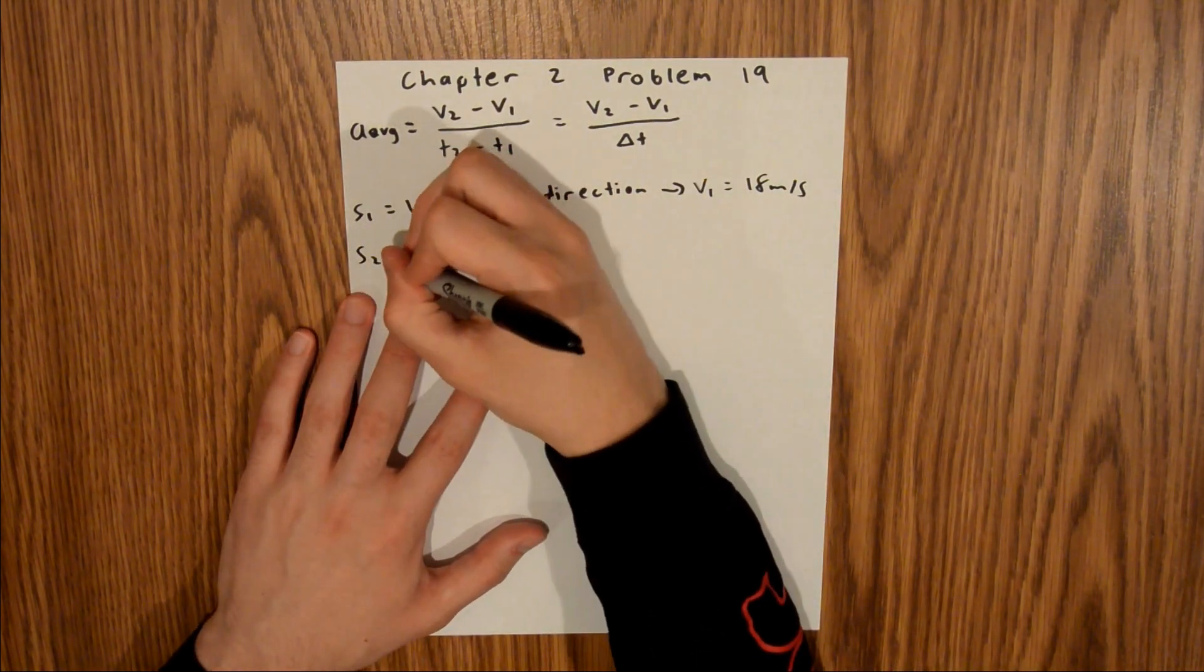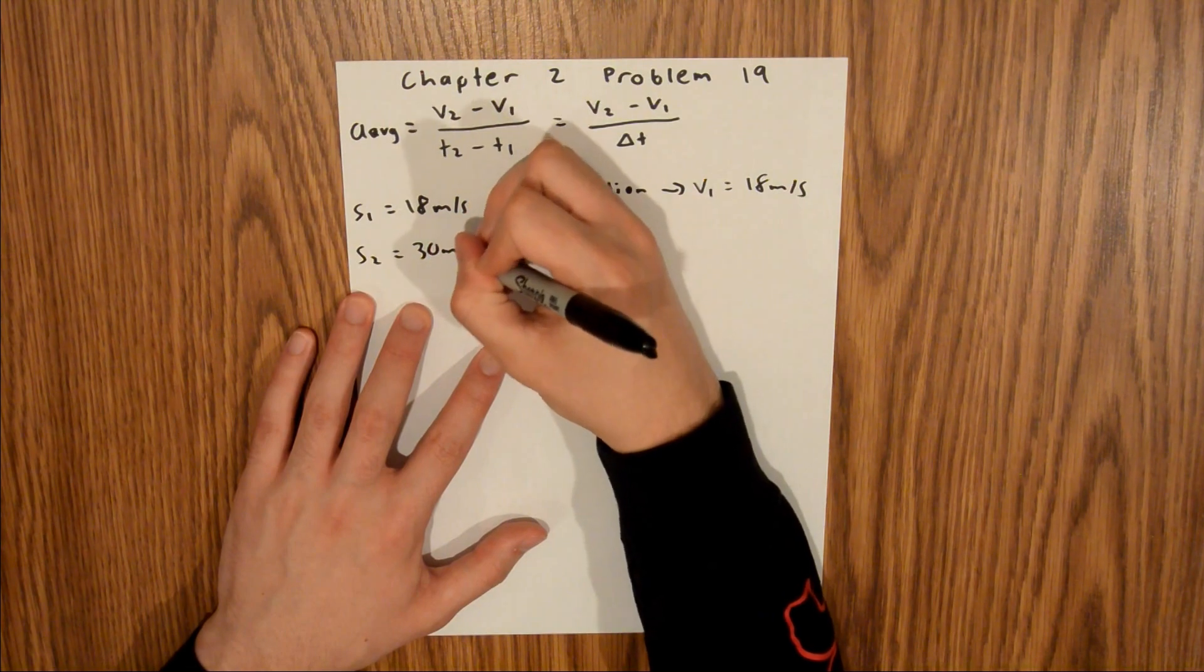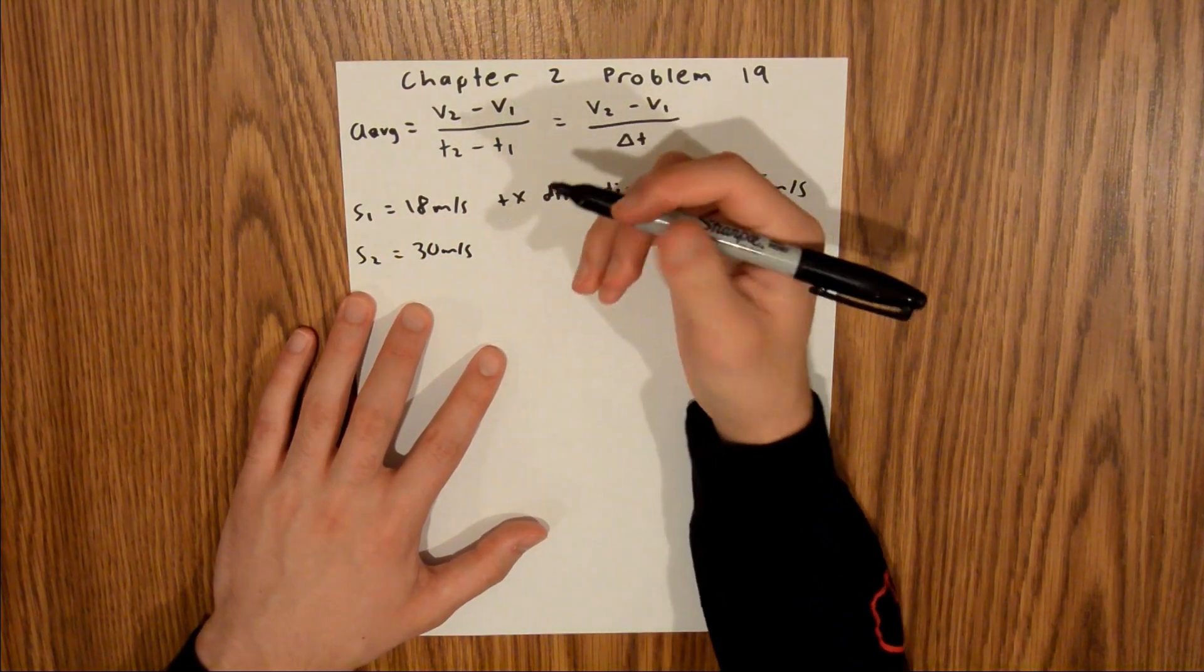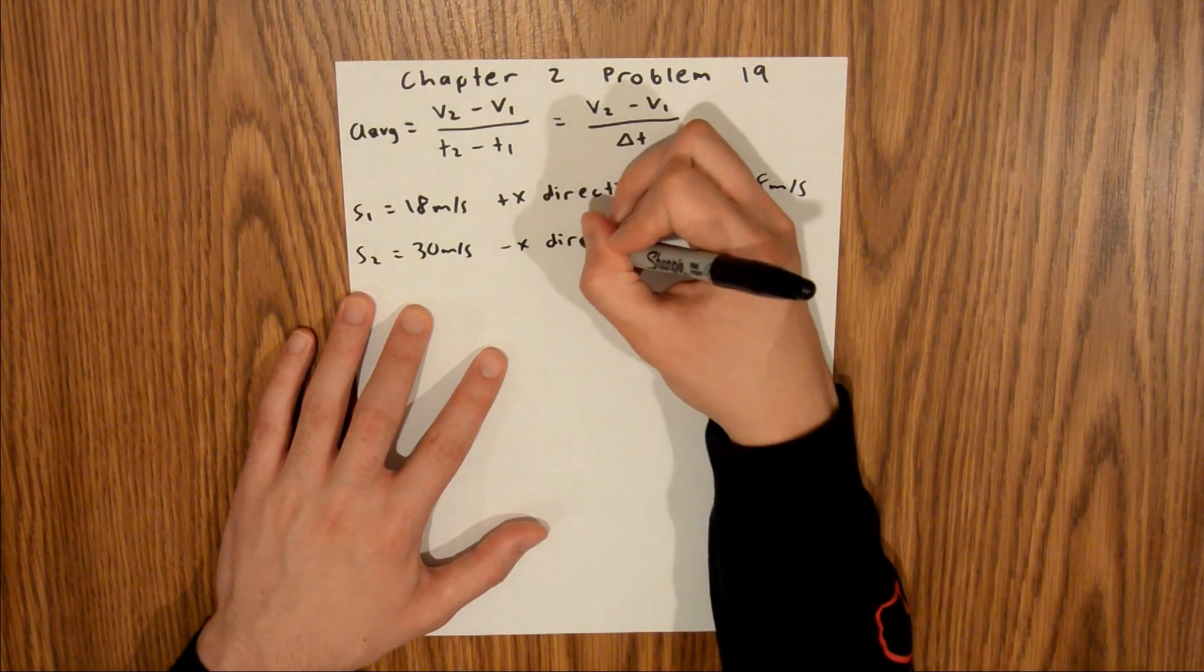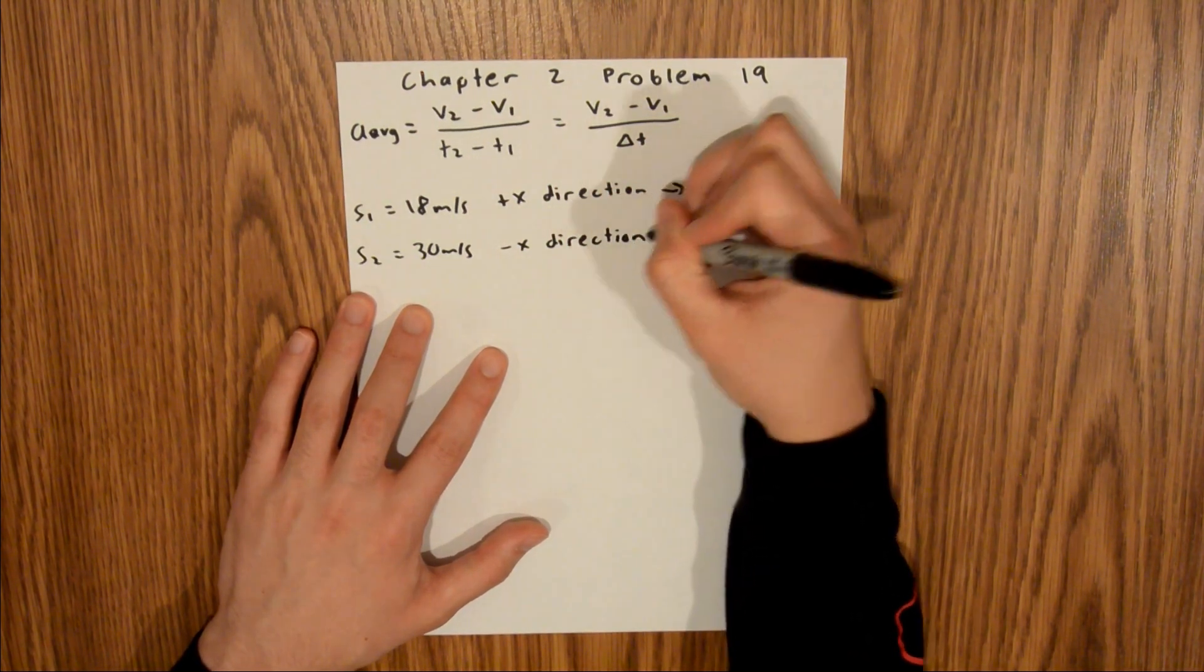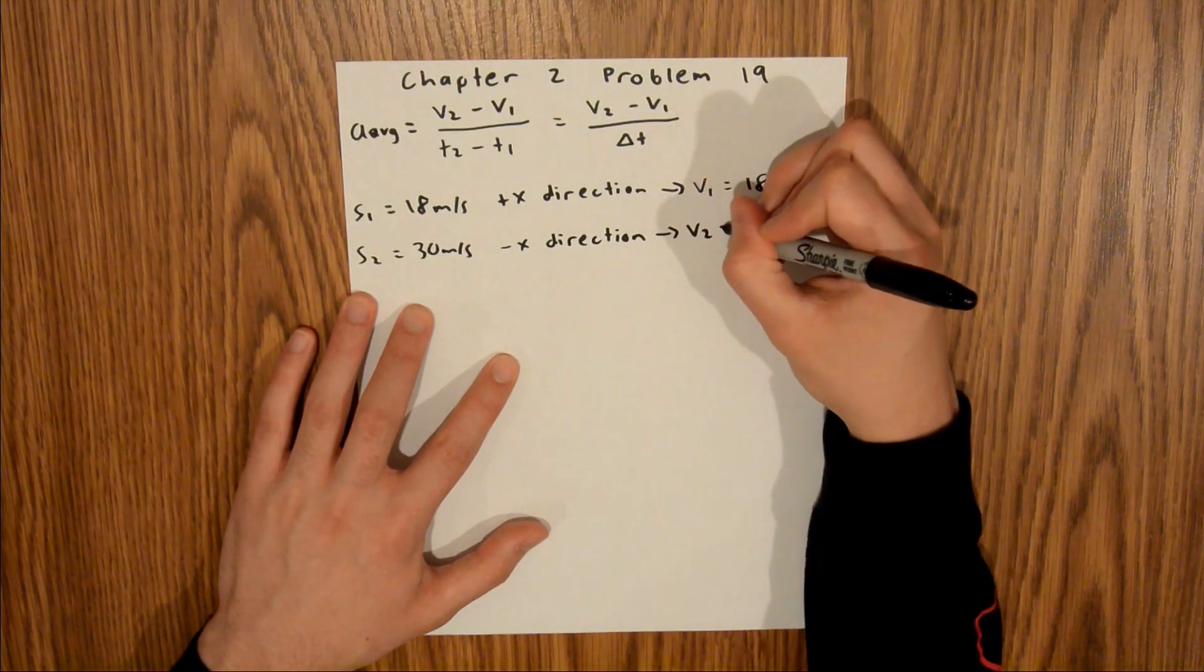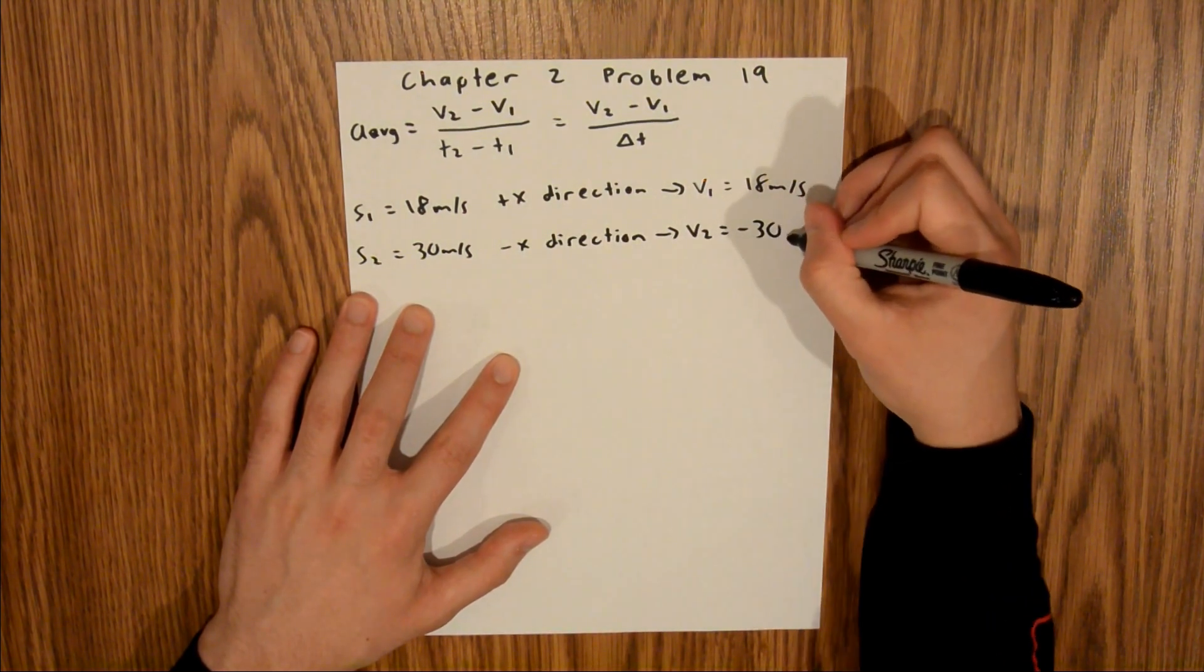We're told that S2 is equal to 30 meters per second, and we're told that it's in the opposite direction of S1, meaning that this is in the negative x direction. So then V2 is equal to negative 30 meters per second.